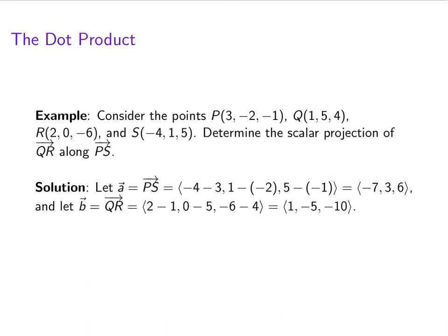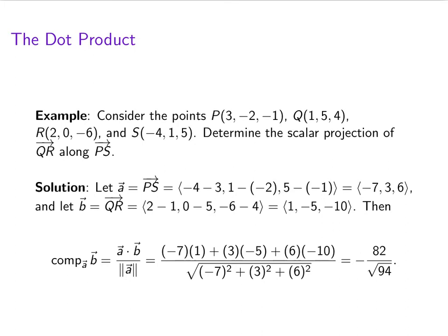And so I called A the vector PS and I called B the vector QR. So the scalar projection of B onto A is calculated by doing A dot B over the length of A. Plug everything in and we end up with negative 82 over square root of 94.